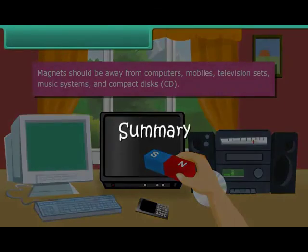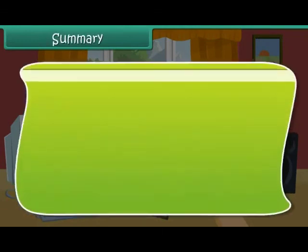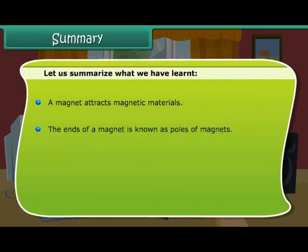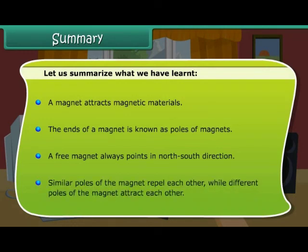Summary. Let us summarize what we have learned. A magnet attracts magnetic materials. The ends of a magnet are known as poles of the magnet. A free magnet always points in the north-south direction. Similar poles of the magnet repel each other, while different poles of the magnet attract each other.